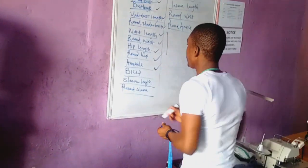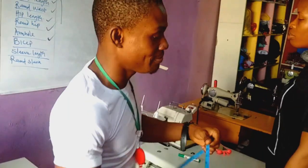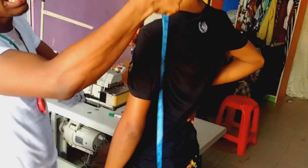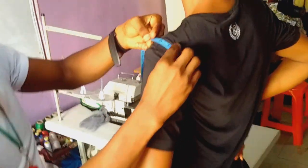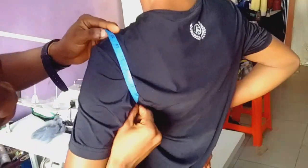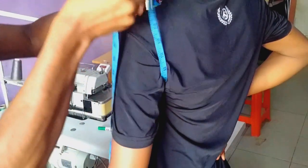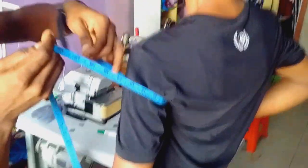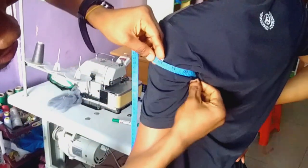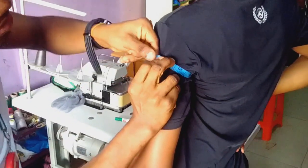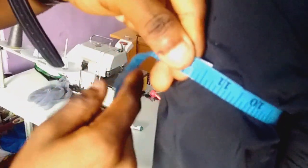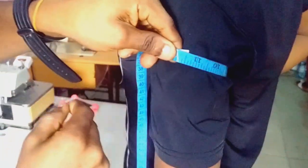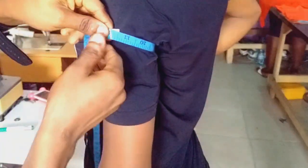We also have the bicep. Most of us have heard of the bicep. When I measured the armhole, see what I did — the armhole goes around like this, while the bicep is measured at that same base but just around the upper arm. Her bicep is 11 and a half inches. I put two fingers in because I needed allowance. So armhole is like this; bicep is like this.